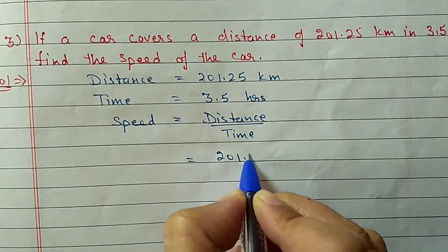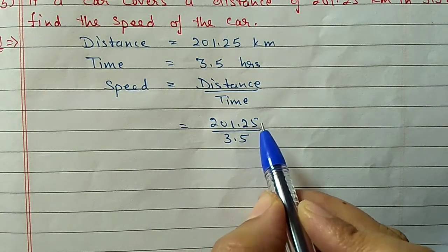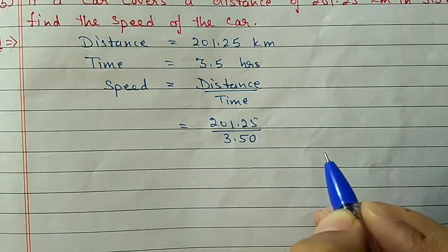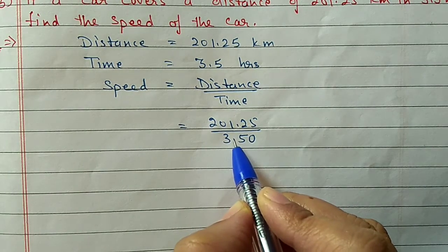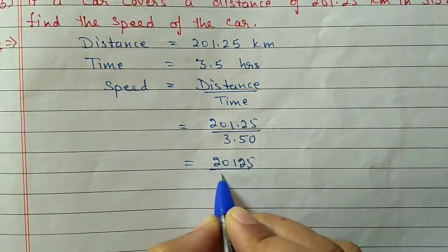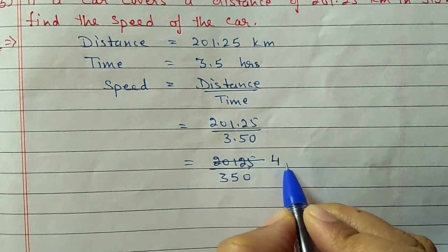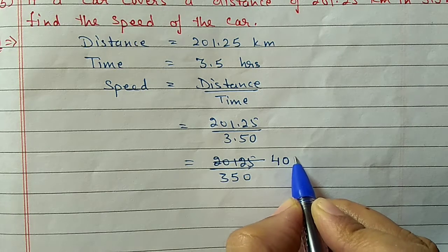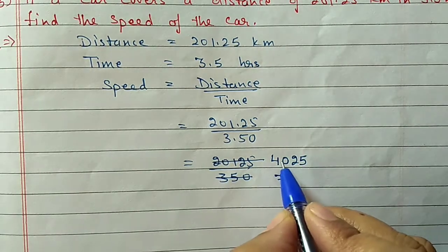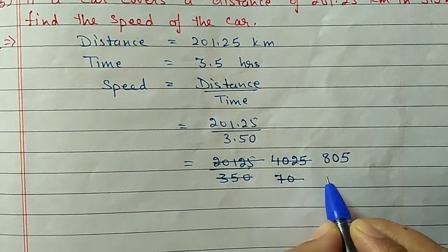We have 201.25 divided by 3.5. The numerator has 2 decimal places and the denominator has 1, so we make them like decimals by adding a zero to 3.5, making it 3.50. Now both have 2 decimal places, so we remove the decimals and write it as 20125 by 350. We can cancel with 5: this simplifies step by step through cancellation.